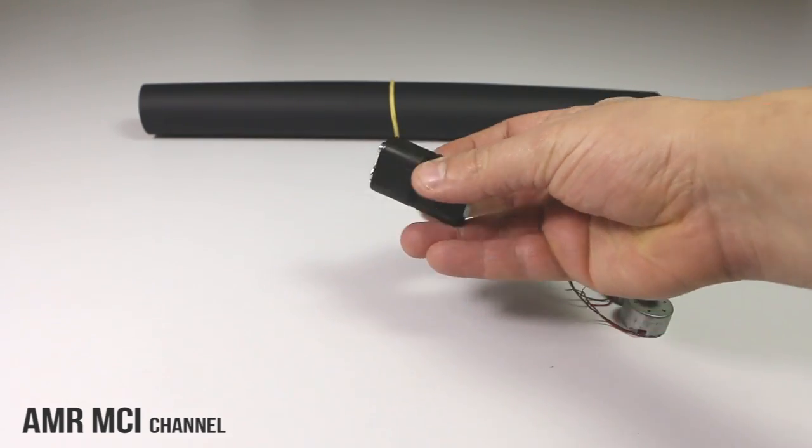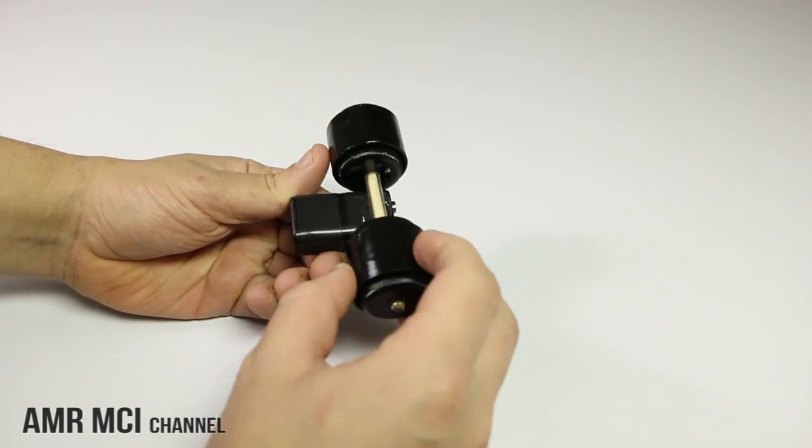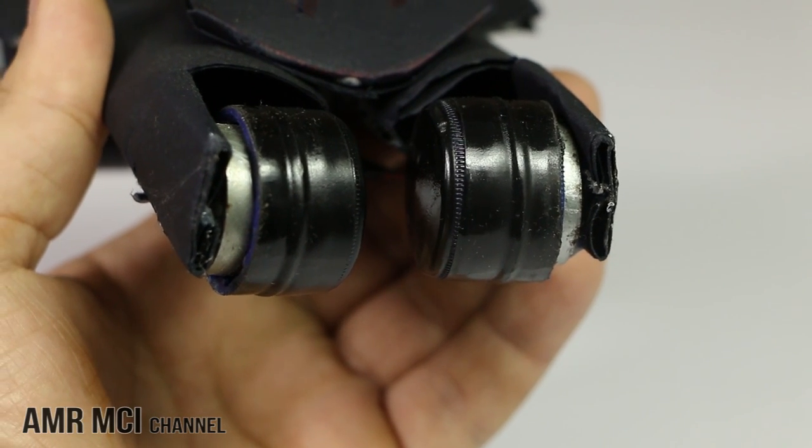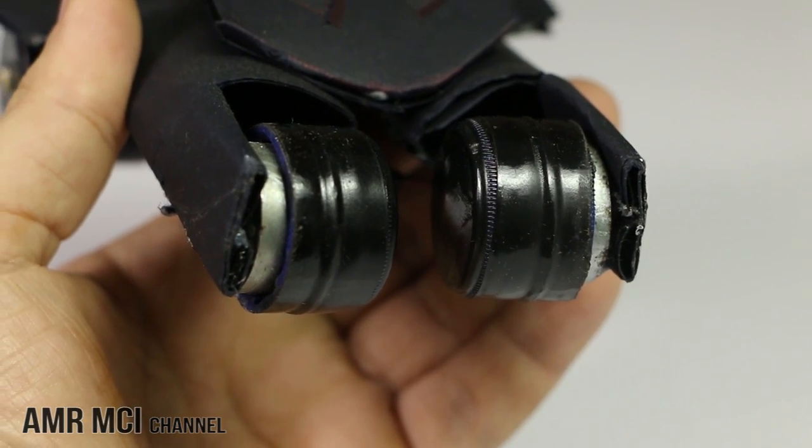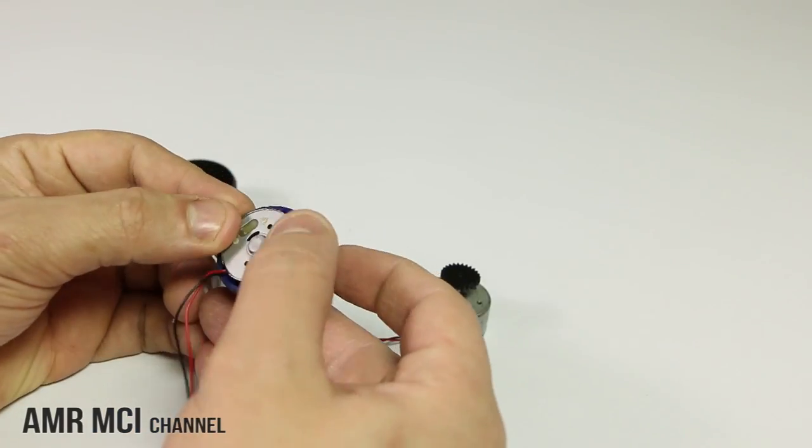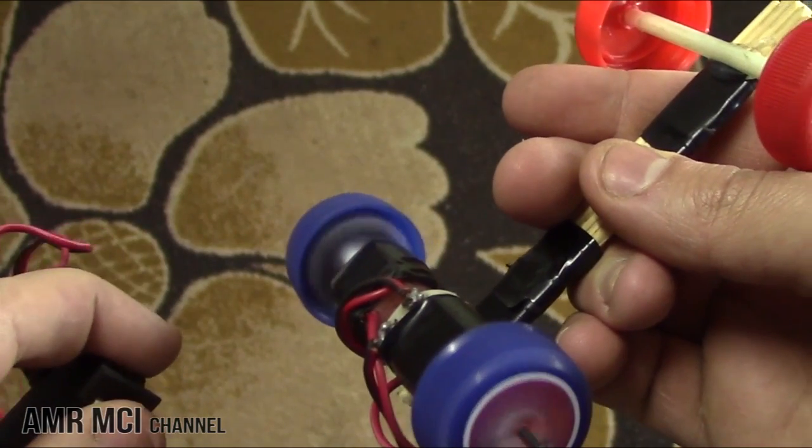After that, take the 9-volt battery and glue the wheels right at the middle. At this point you have finished the back wheels. The next step is to assemble the front wheels.